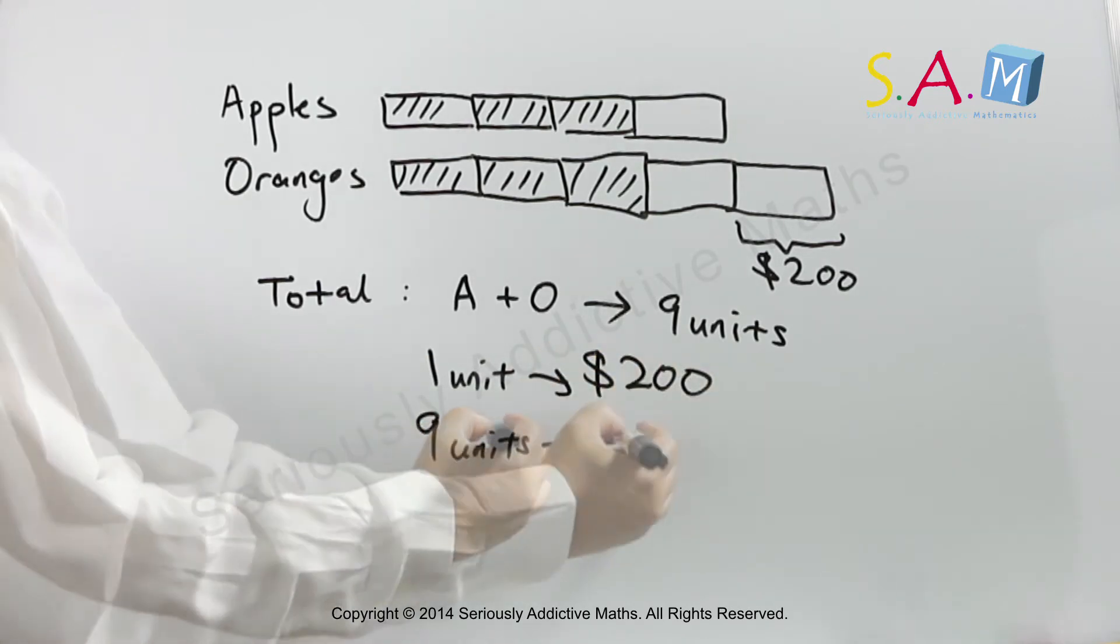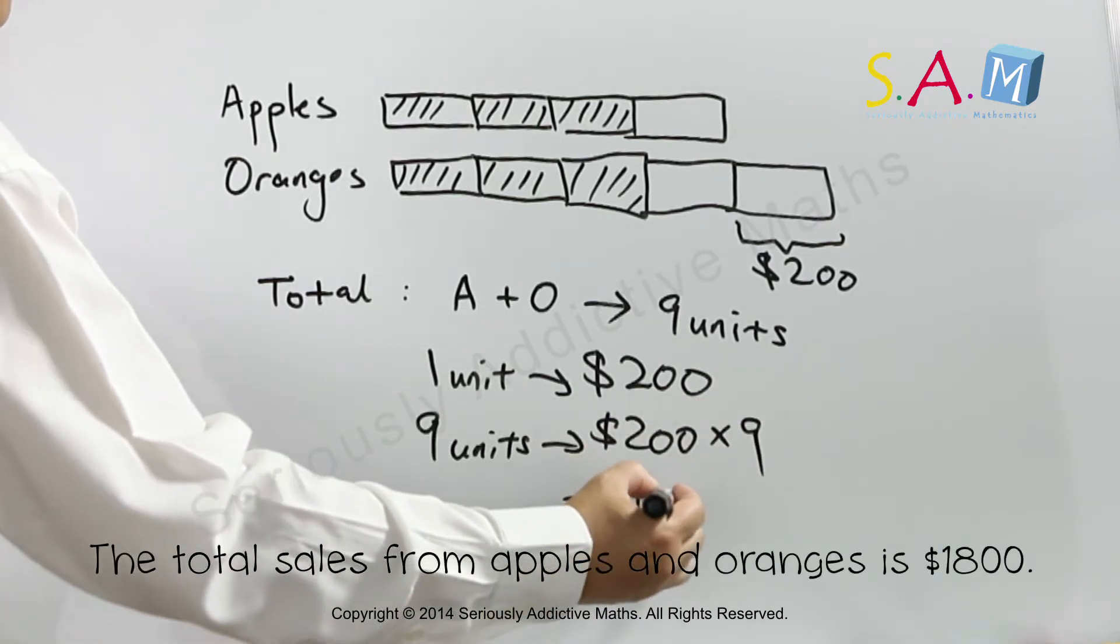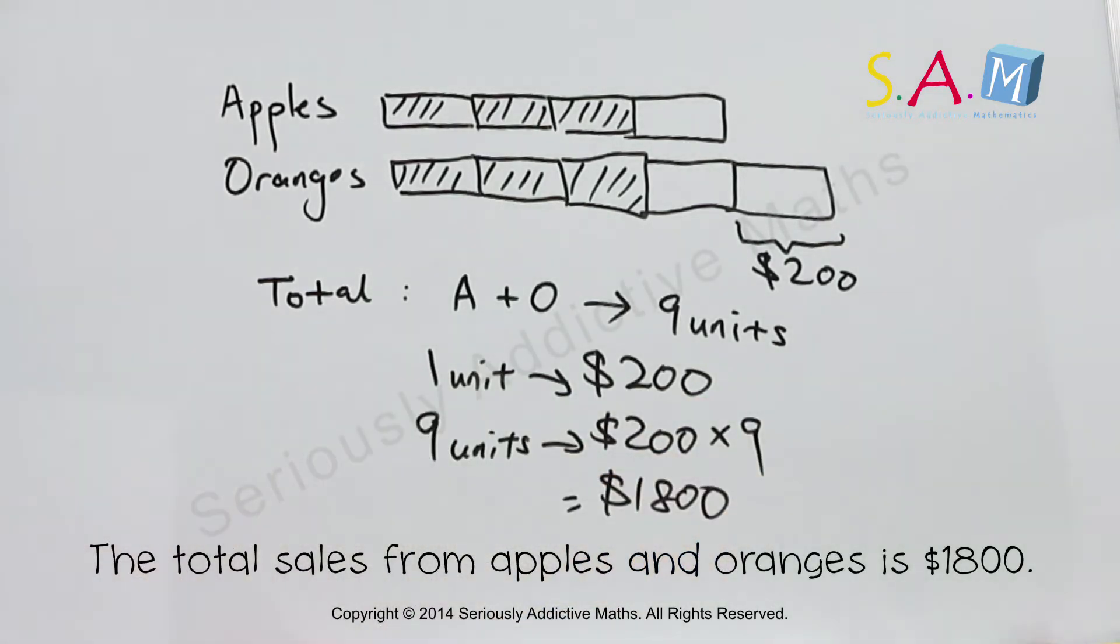Nine units, 200 times nine, which is actually 1,800 apples and oranges.